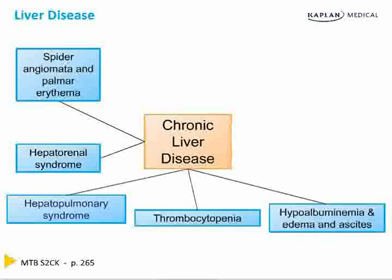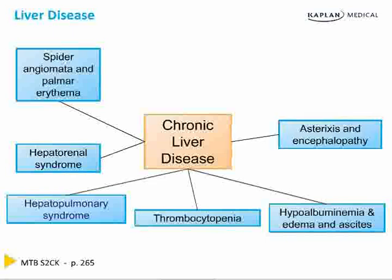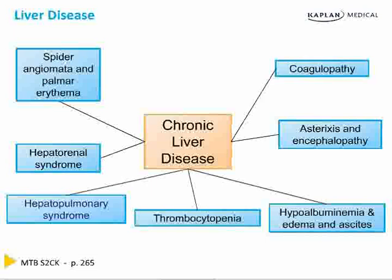The liver produces albumin, so you become hypoalbuminemic. Therefore, you lose oncotic pressure and develop edema and ascites. The liver clears different toxins, so you get asterixis and encephalopathy from the buildup of GABA. The liver also produces clotting factors, so without them you become coagulopathic.